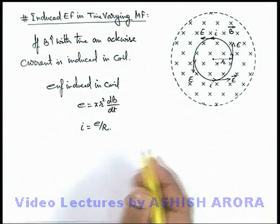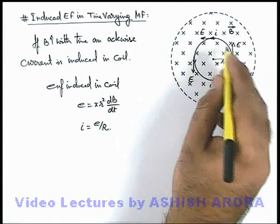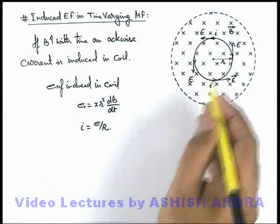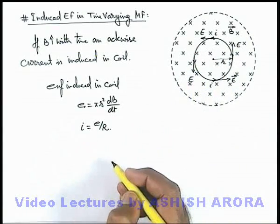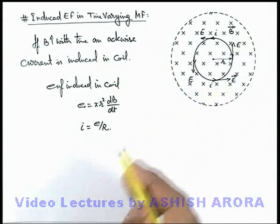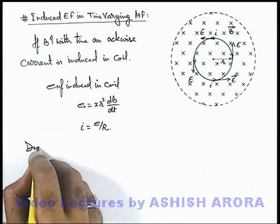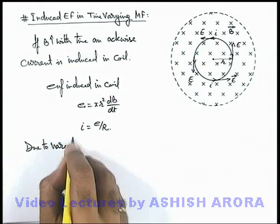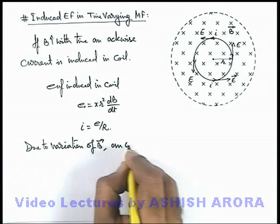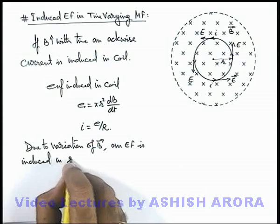We can directly write that if an electric field E is established which gives rise to a current, due to this induced electric field an EMF is induced in it. This is quite an important concept we will discuss mathematically in detail in coming sections about the magnitude of this induced electric field. But here you must keep in mind that due to variation of B vector, an electric field is induced in the region.